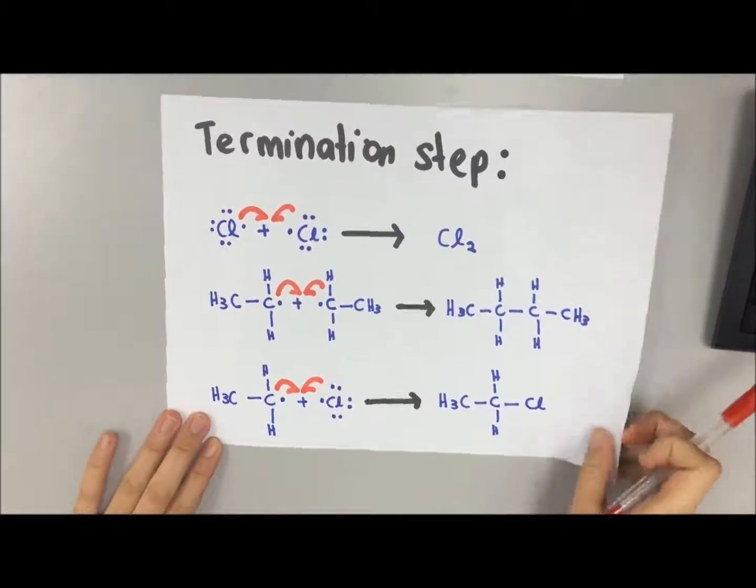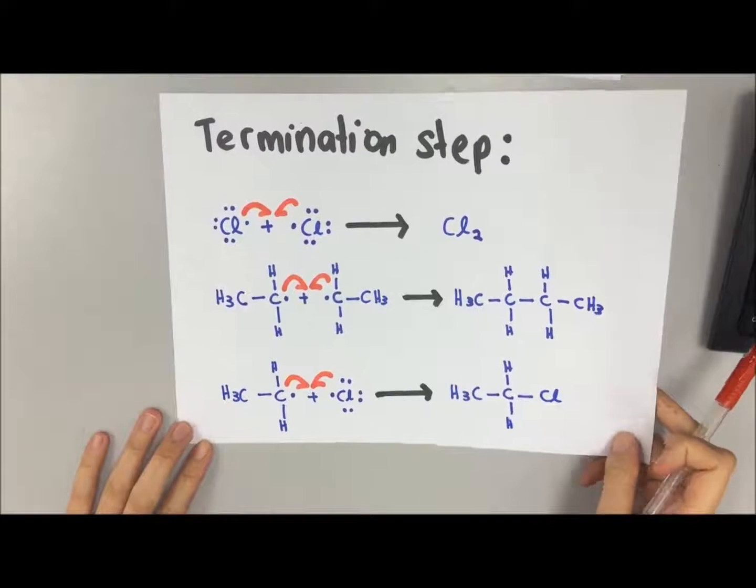Then we have an ethyl and a chlorine radical forming one chloroethane. Therefore, here are all the steps that we needed for the mechanism.